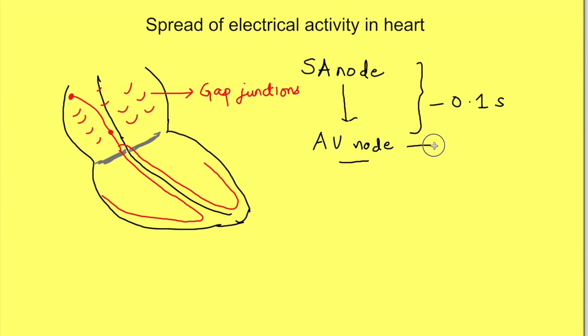Conduction in the AV node is slow and there is a delay of about 0.1 second here. This is known as AV nodal delay.